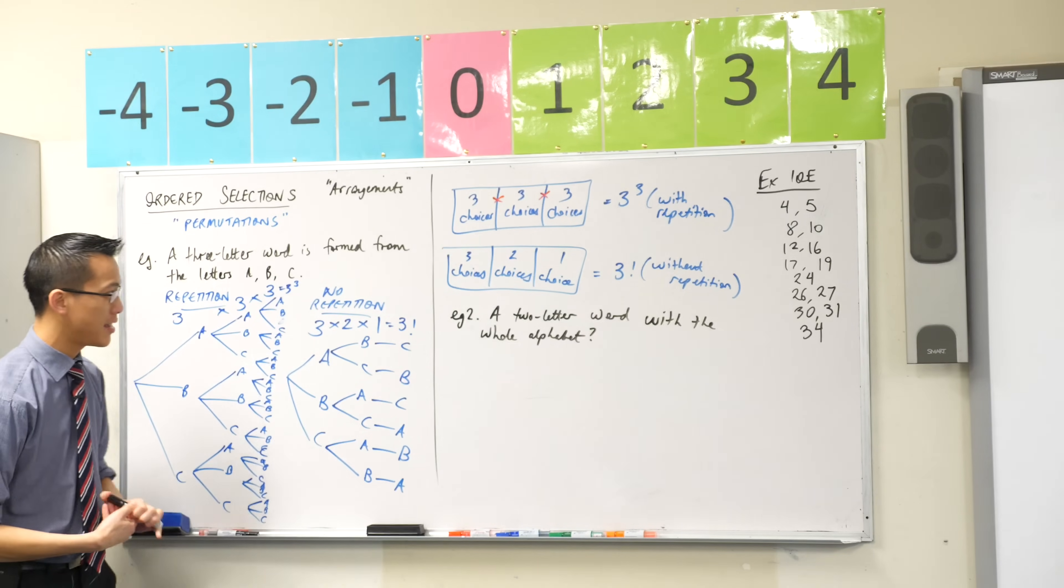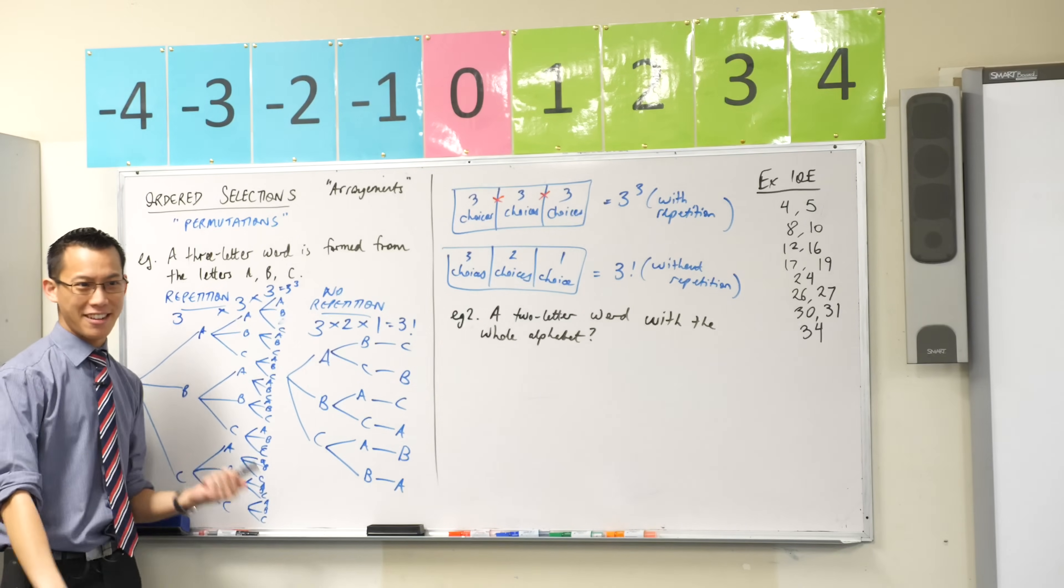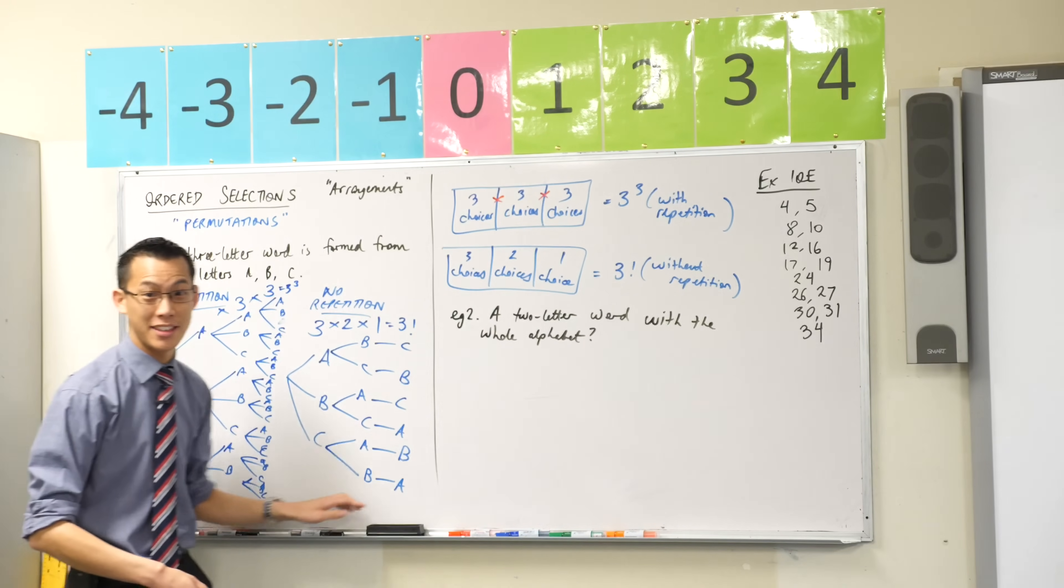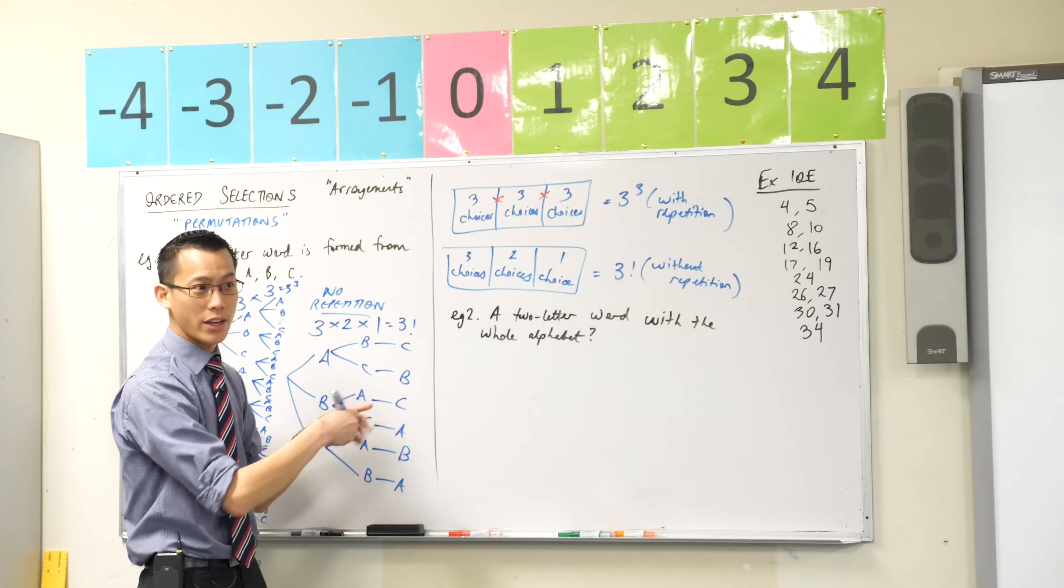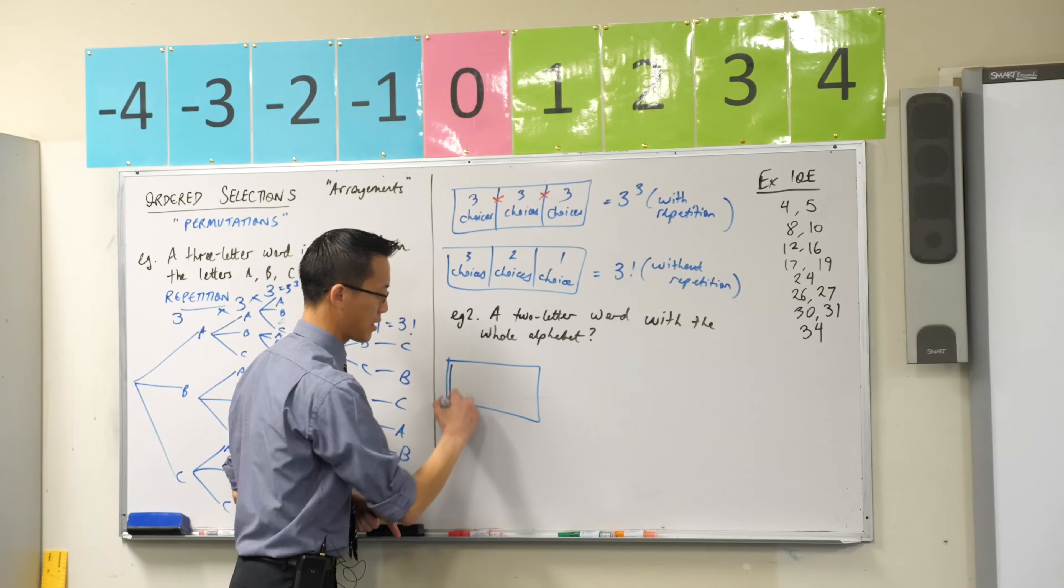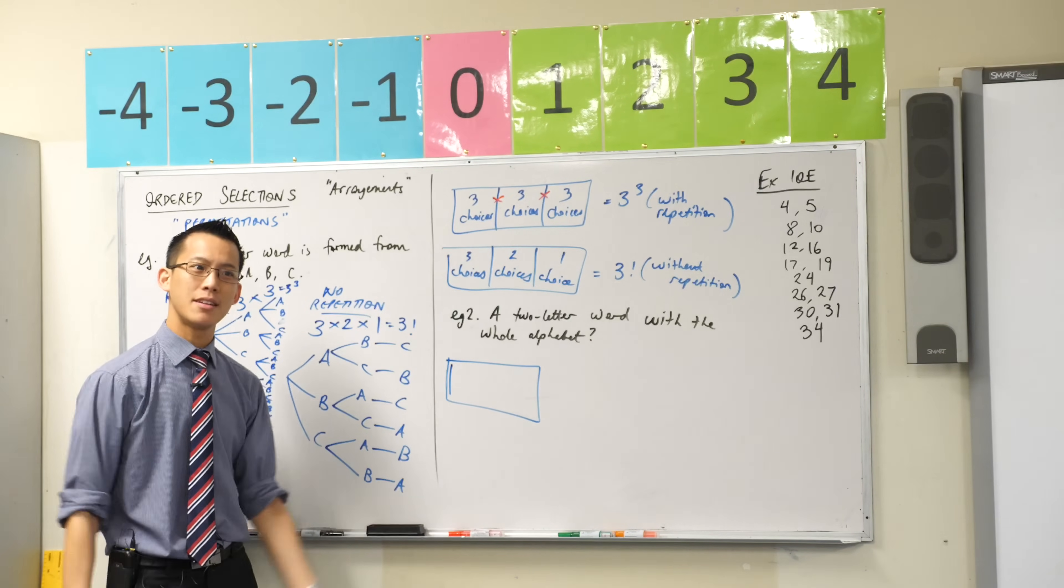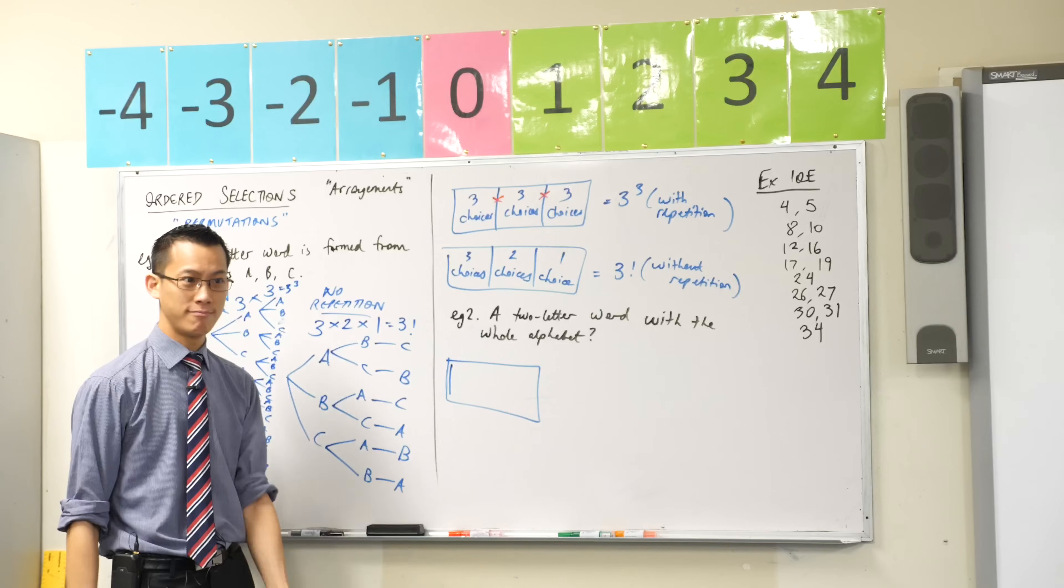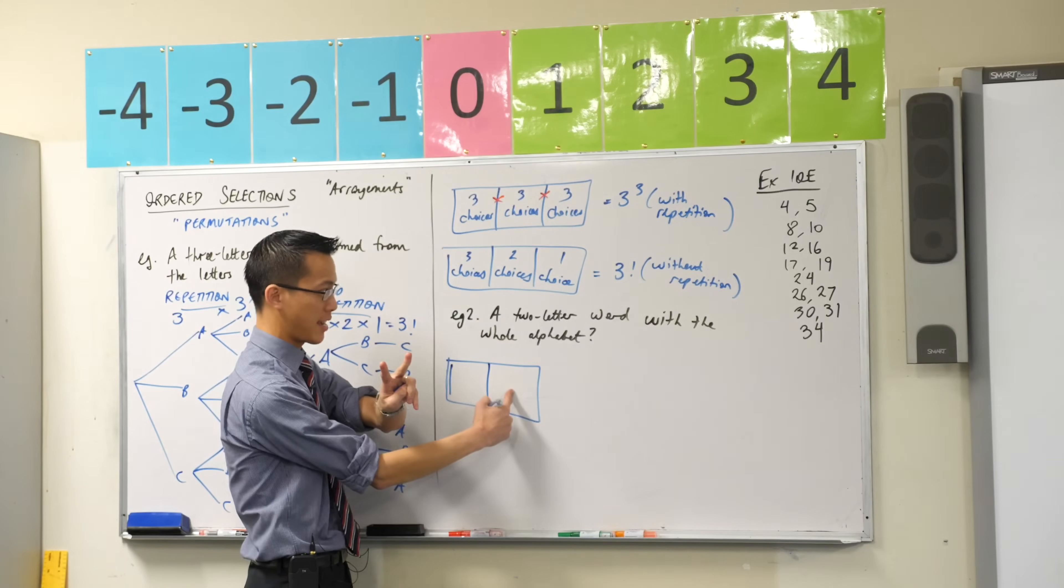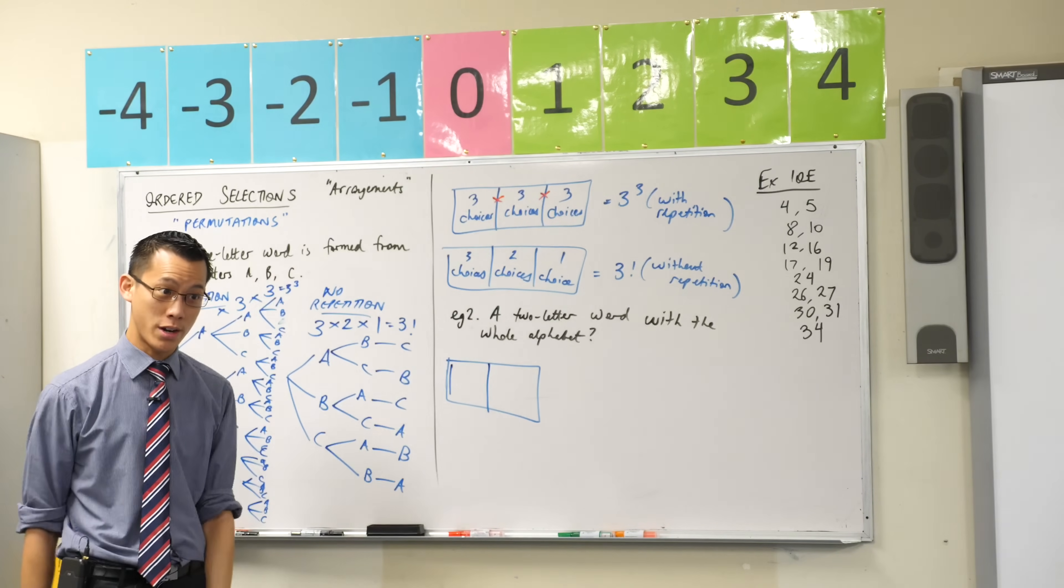So we've got A through Z to choose from. Now, you can see in a situation like this, you don't want to draw the tree diagram for this, do you? Like, you'll start drawing and then the sun will set and you'll think I've got better things to do with my time. So instead, we're going to do this little simple structure here. I'm going to draw my box. How many different slots will there be in my box? Just two. Because you are choosing a first letter and a second letter and ta-da, there is your two-letter word.